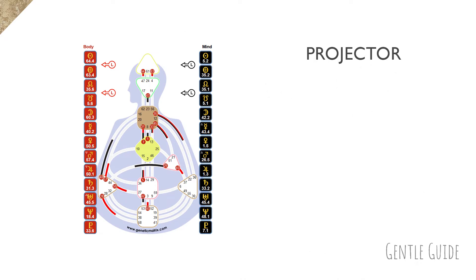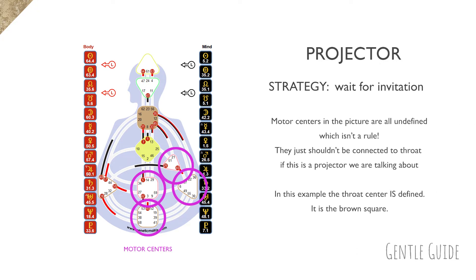Let's talk about projectors first. Their strategy is to wait for an invitation and we'll get to that in a second. So this is an example of a projectors chart. Every projector has a sacral center undefined, the same as manifestors. What differentiates them from manifestors is that they don't have any of the motors which are sacral, emotional, heart and root center connected to throat. Furthermore, throat center doesn't even need to be defined to be a projector. So I hope this is clear. If not, please ask me some questions in the comments below.